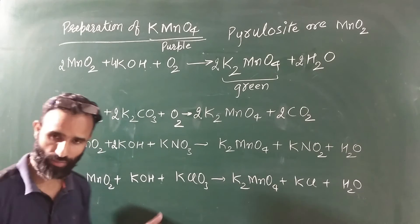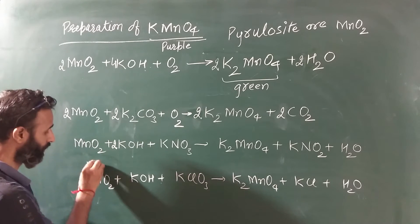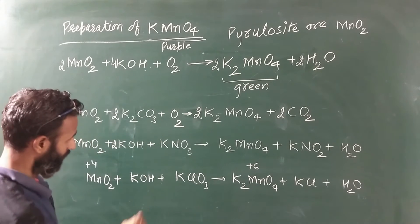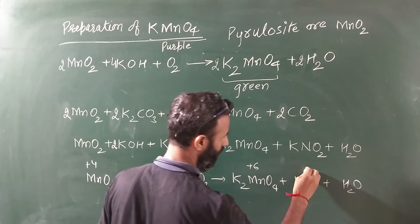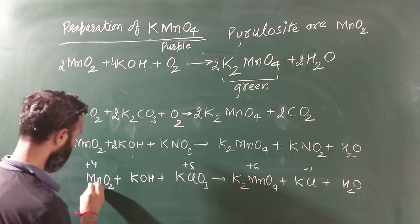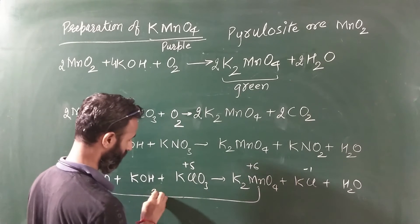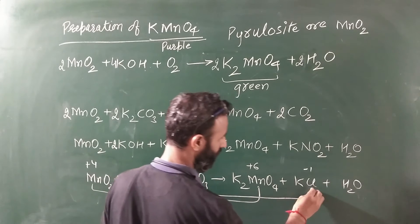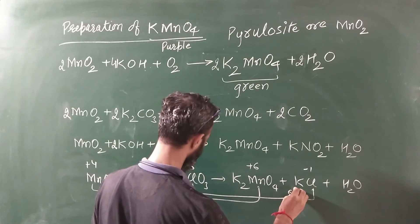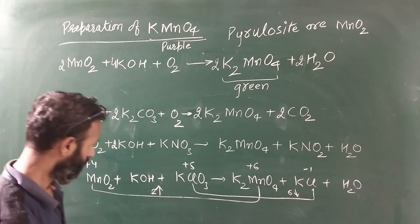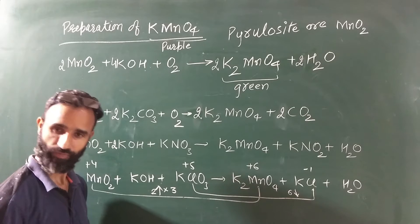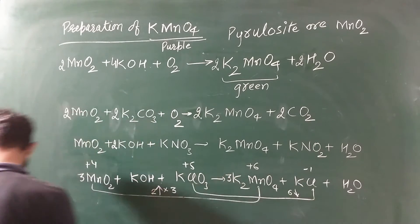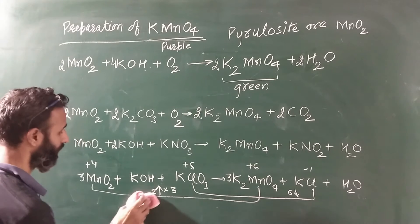Let us balance it by the oxidation number method. This is plus 4 and this is plus 6. This is plus 5 and this is minus 1. So from plus 4 to plus 6, there is an increase of 2. From plus 5 to minus 1, there is a decrease of 6. So multiply this by 3.